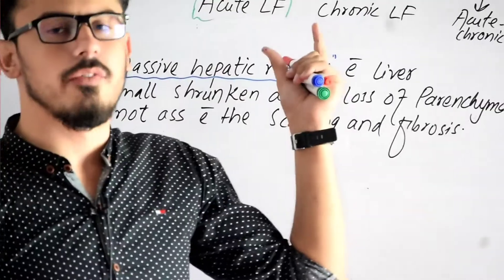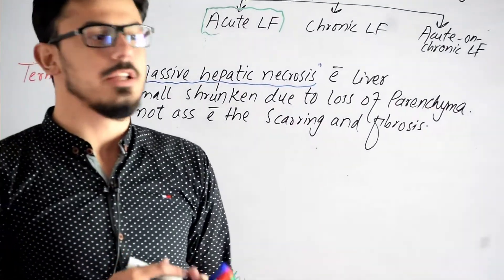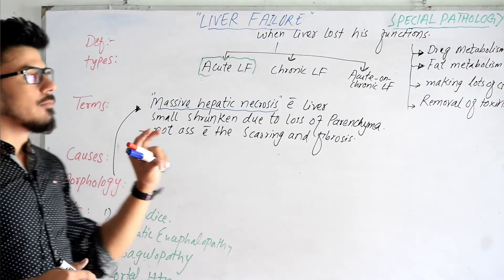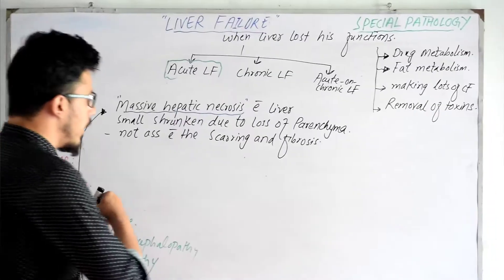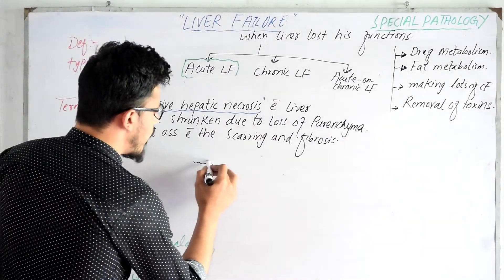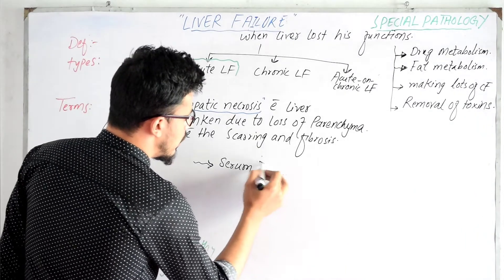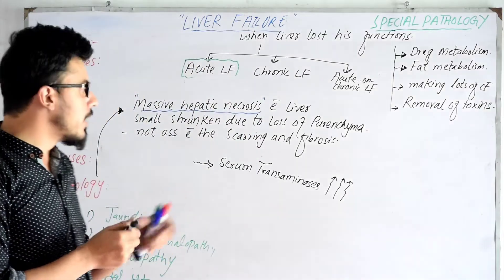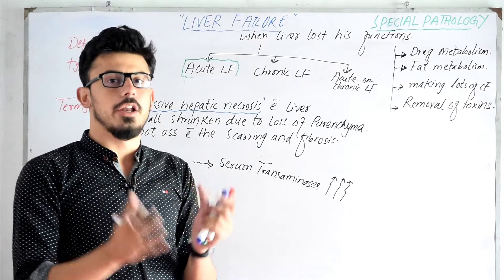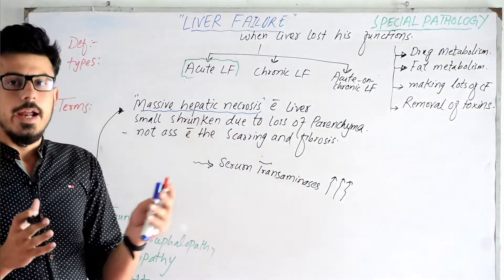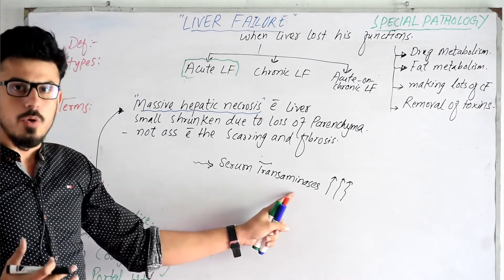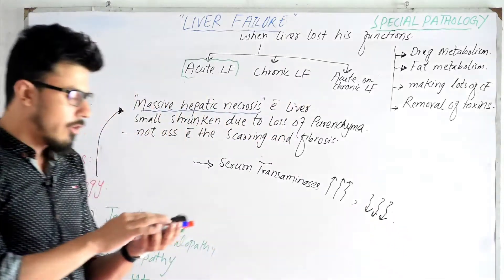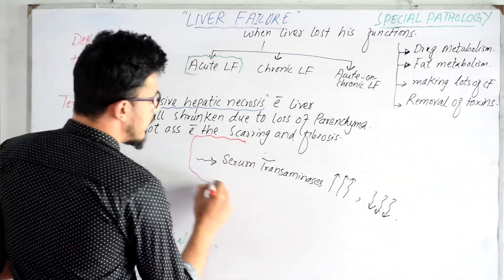If a patient is suffering from acute liver failure, they will have general symptoms like nausea, vomiting, and jaundice. Regarding the serum transaminase level profile: at the beginning phase, serum transaminases are increased even up to 1000, because the liver gets enlarged and edematous. But after two to three weeks, as necrosis progresses and the liver becomes shrunken, serum transaminase levels further decrease.